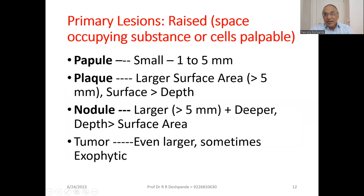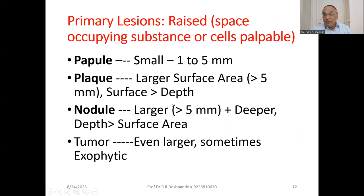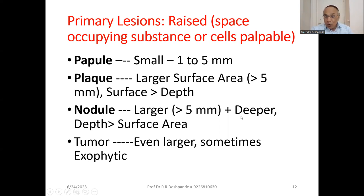Next step: raised lesions. Space-occupying substance or cells are palpable — something is coming up above the skin level. First was macule; this is papule — papule means elevated, 1 to 5 millimeters. Plaque is larger, with greater surface area, more than 5 mm, and surface is greater than the depth — convexity is more than the concavity. Nodule is still bigger, greater than 5 mm, but nodule is always deeper. The difference between plaque and nodule: plaque has more surface than depth, and nodule is deeper than the surface area — nodule has roots going deeper. Tumor is even larger than nodule, sometimes exophytic.